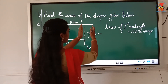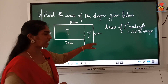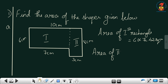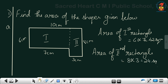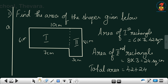Now the second rectangle. Can you tell me what is the length? The length is 8 and the breadth is 3 centimeter. So area of the second rectangle is equal to 8 into 3, that is equal to 24 square centimeter. So what will be the total area of the shape? Total area is equal to 42 plus 24, that is equal to 66 square centimeter.